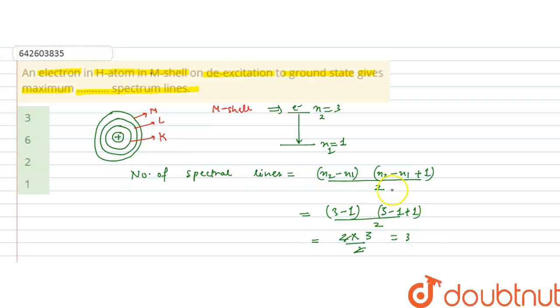It means total number of spectral lines which are produced when an electron de-excites from the third excited, second excited state that is present in M shell to ground state is 3. So the A option is the correct answer. I hope you understood the solution. Thank you.